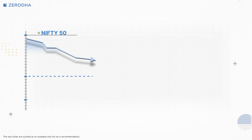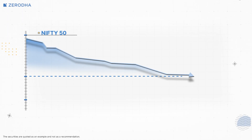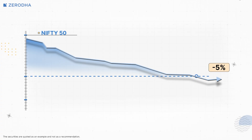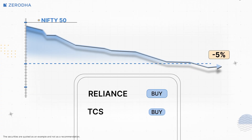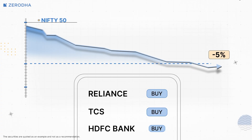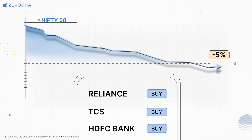Now when Nifty drops by 5% from the current price, the ATO will be triggered and an order to buy Reliance, TCS, and HDFC Bank will be placed on the exchanges.